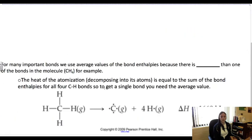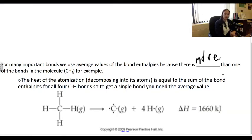For many bonds, we use average values for bond enthalpies because there is more than one of the bonds in the molecule. The heat of atomization, meaning decomposing into its atoms, is equal to the sum of the bond enthalpies for all four CH bonds. So to get a single bond, you need to average it. These four CH bonds get broken and we end up with carbon and four hydrogens, and you average those values. So 1660 is for all four of them, and then we average it and we have one bond.